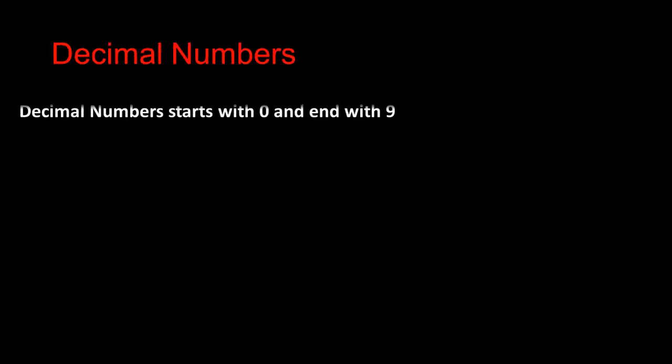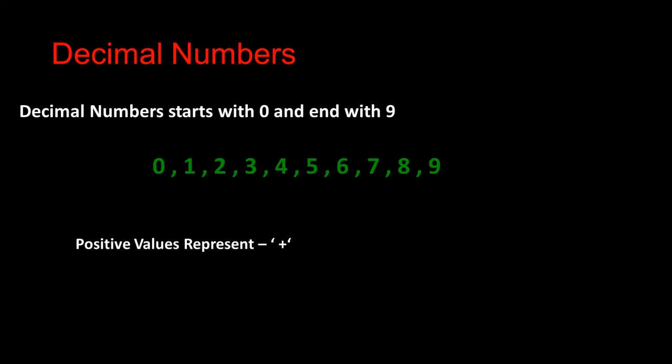Decimal numbers are mostly used by people. We have 10 symbols: 0, 1, 2, 3, 4, 5, 6, 7, 8, and 9. There are two types of numbers. The first is a positive number, which we represent using a plus sign in front of the number — or sometimes we just write the number alone, which is also considered positive. Negative numbers are represented with a minus sign in front.